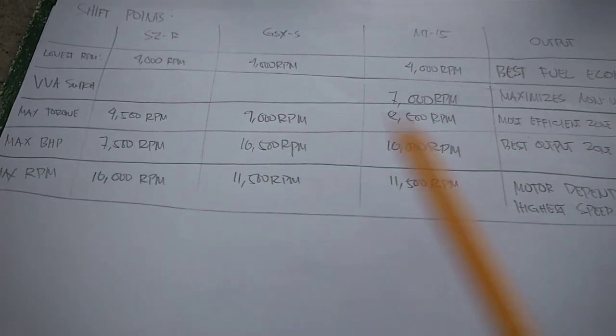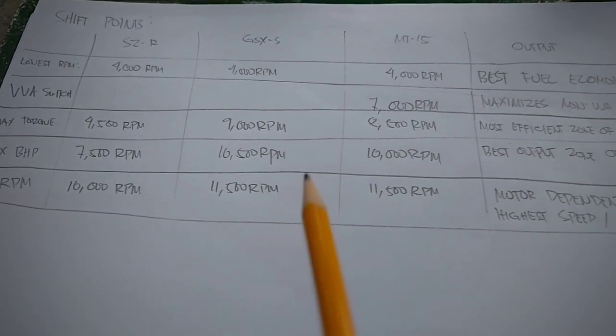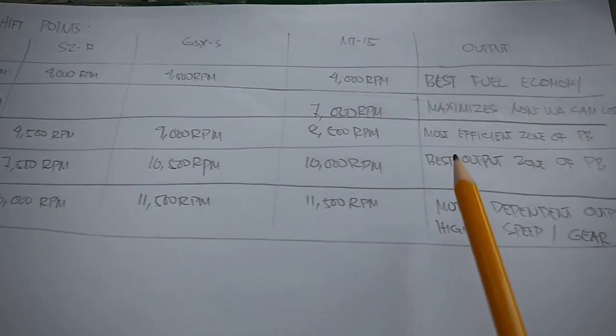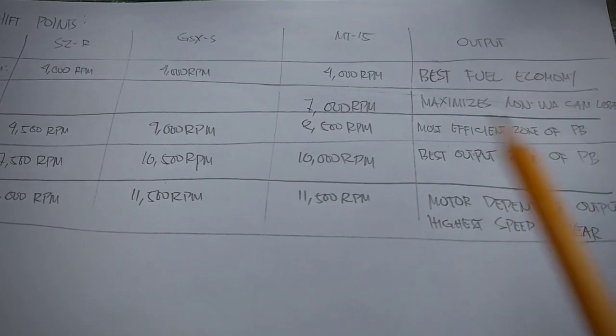This is the part wherein most efficient yung makina mo kasi bawat patak ng gas ay naku-convert mo sa hatak. So torque ang hatak and horsepower ang bilis. So kapag nasa maximum torque RPM yung motor mo, it means nasa most efficient zone siya ng RPM range.